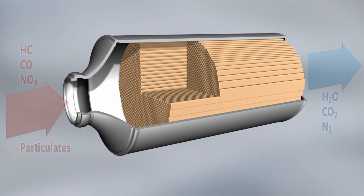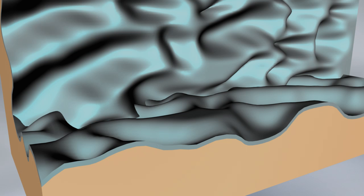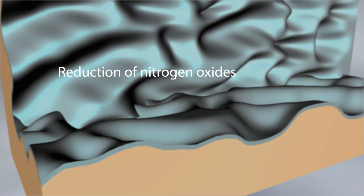The four-way conversion catalyst consists of a porous ceramic structure. The ceramic is covered with a wash coat containing finely dispersed precious metal particles. These accelerate the chemical conversion of the pollutants.